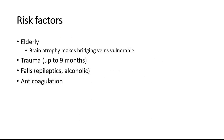The risk factors for subdural hemorrhage include: elderly patients with brain atrophy, which makes their bridging veins vulnerable and easier to rupture. Trauma can also cause subdural hematoma, and this trauma is often forgotten by the patient as it was so minor or so long ago — it can be up to 9 months before symptoms occur. Falls, especially frequent falls due to epilepsy or alcoholism, are also risk factors. Other risk factors include anticoagulation, which increases bleeding tendency.